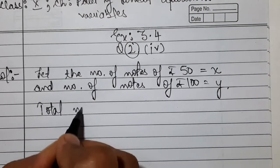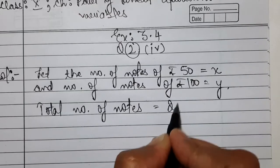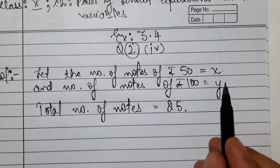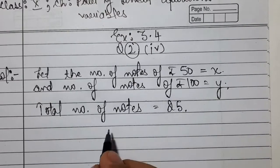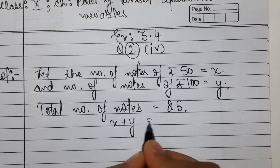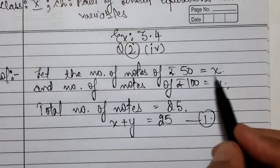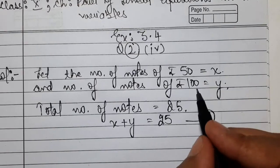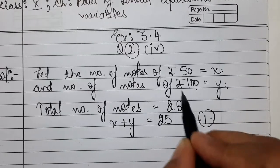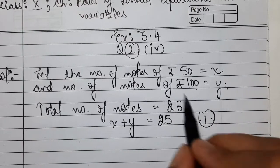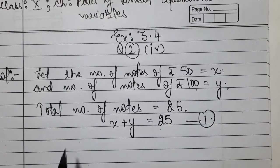The total number of notes is 25, consisting of Rs. 50 and Rs. 100 notes. So the first equation becomes: x + y = 25. For example, if we get 10 notes of Rs. 50 and 15 notes of Rs. 100, then 10 + 15 = 25. That is why the equation is x + y = 25.